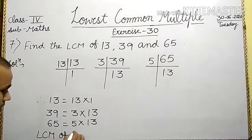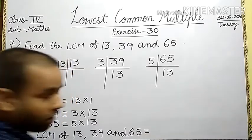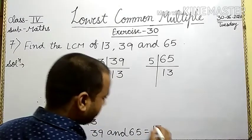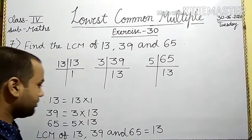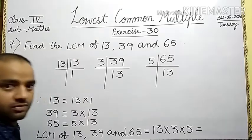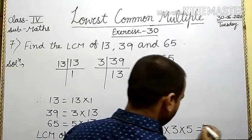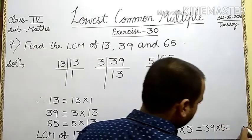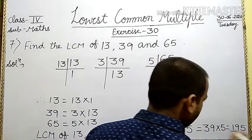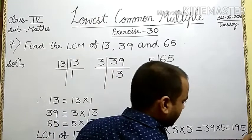The LCM of 13, 39 and 65. Write all prime factors with maximum times. We have 13: occurs 1 time in each — write 1 time. Note: we do not write 1 since any number multiplied by 1 is itself. 3 occurs 1 time; 5 also occurs 1 time. We multiply: 13 into 3 is 39, into 5 is 195. Your required answer is 195. Is it clear?